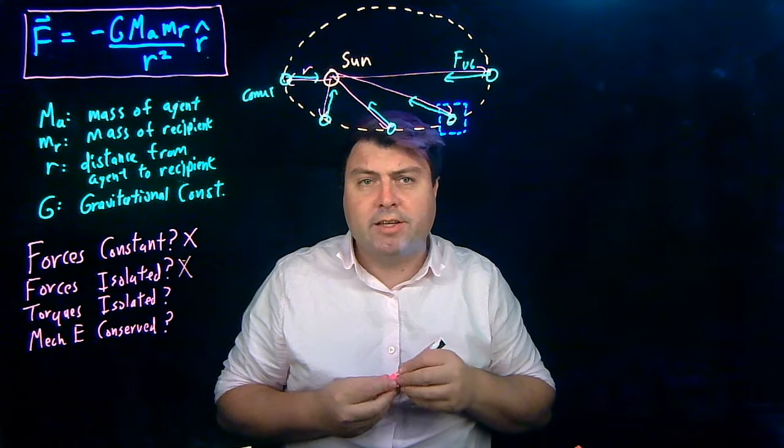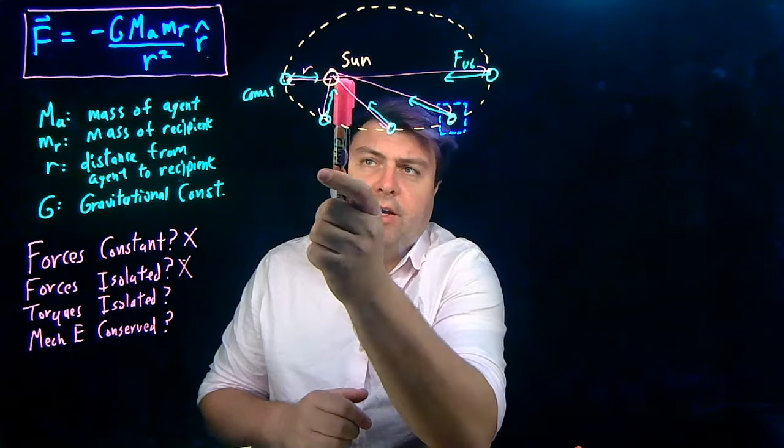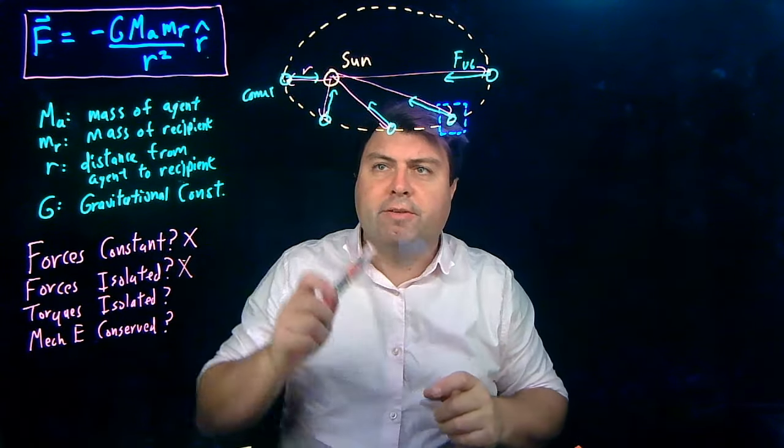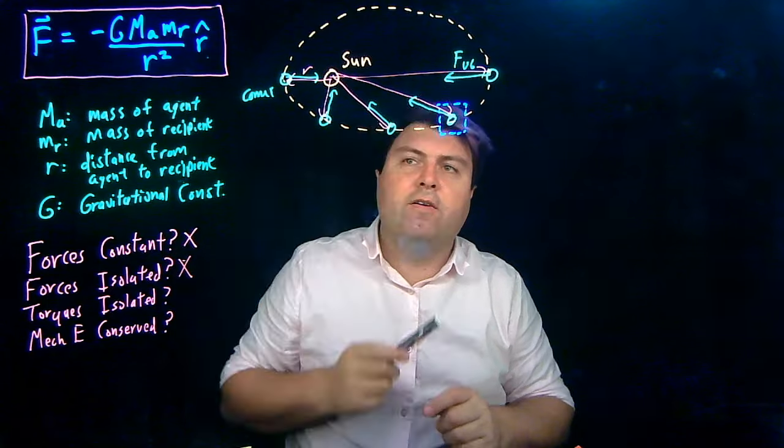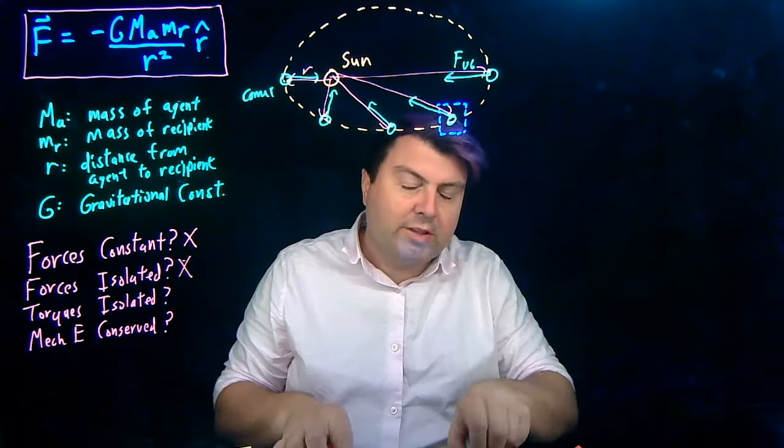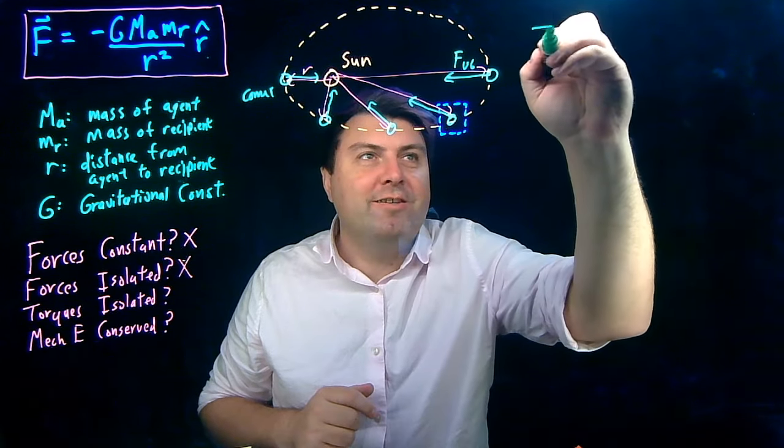If we ask if the torques are isolated, we have a very interesting question. First, we can see graphically that this magenta line and this green line are in opposite directions. And that's the case for all five of these. And in fact, it will be the case for all of them. But let's show it a little bit nicer, a little bit more mathematically.